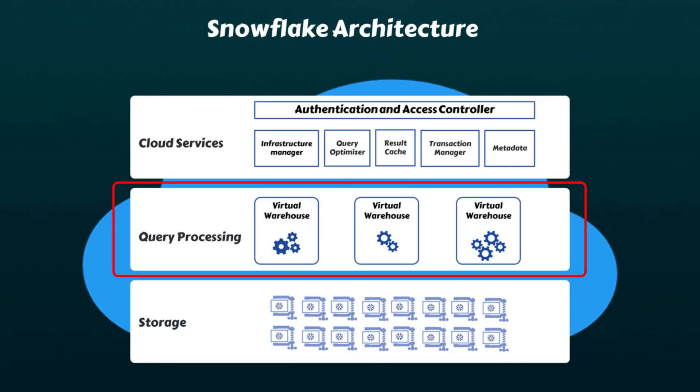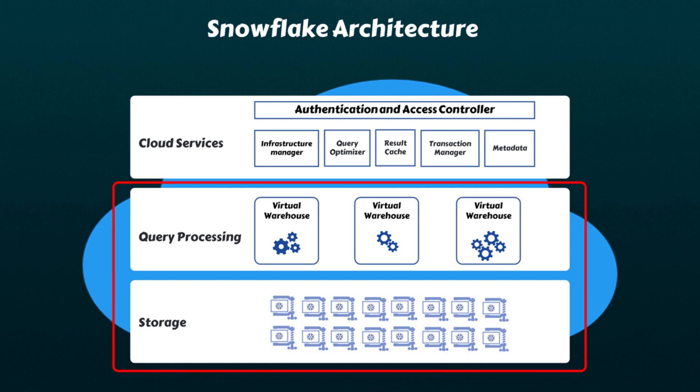Today, we're taking the next step forward to explore the important concepts related to Snowflake's processing layer. As we're already aware, Snowflake's unique architecture intelligently separates its storage and compute layers, allowing for independent scaling and elastic computing. These layers are typically located close to each other and connected with a high-bandwidth network.